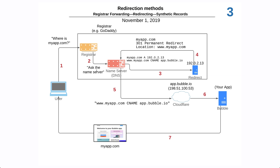The user's computer then makes another request to the name server. The name server says www.myapp.com can be found at app.bubble.io. So the user's computer follows that to the Cloudflare entry point. Cloudflare forwards the request to a Bubble server. Bubble says it can serve up this app on this domain, and it sends your app to the user where it appears on their screen.